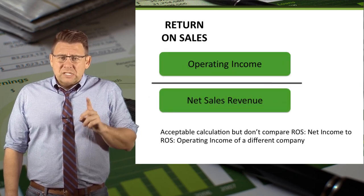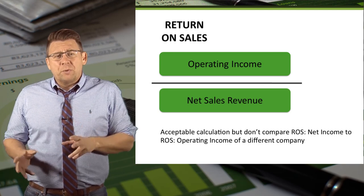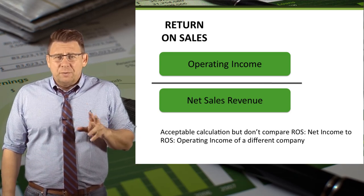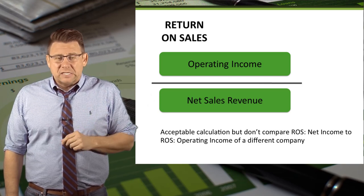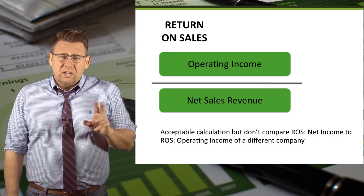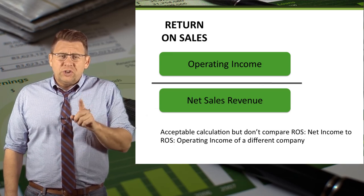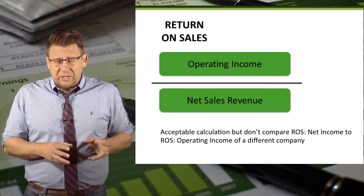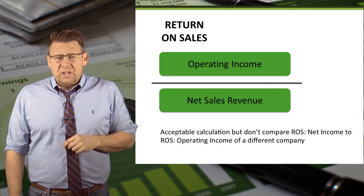Finally, some investors prefer to look at return on sales with operating income rather than net income. Since net income could include some one-time items like gain on sale of land, there's good rationale for focusing on operating income. Just make sure you don't compare operating income return on sales from one company to the net income return on sales of another company.